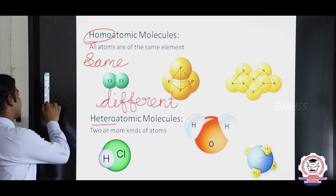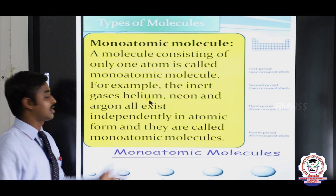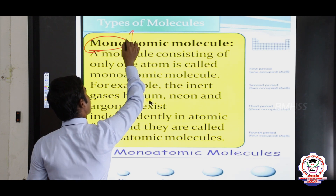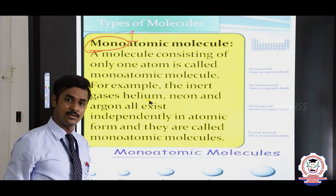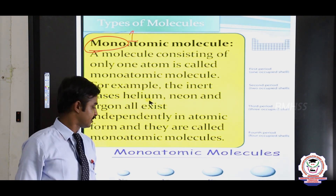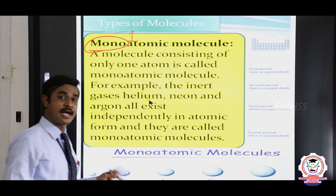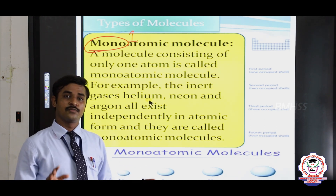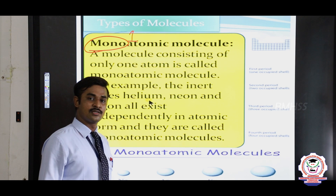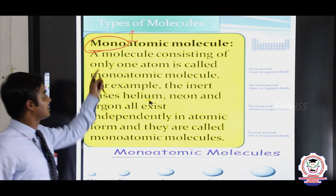We can also classify molecules by their type as monoatomic molecules. The word 'mono' represents the number 1. So if a molecule contains only one atom, it is a monoatomic molecule. For example, helium, neon, argon, krypton, and xenon — these gases are called noble gases. These gases do not make a bond with other elements and remain unique. Noble gases can form a molecule by itself as a single atom, so this molecule containing only a single atom is the monoatomic molecule.